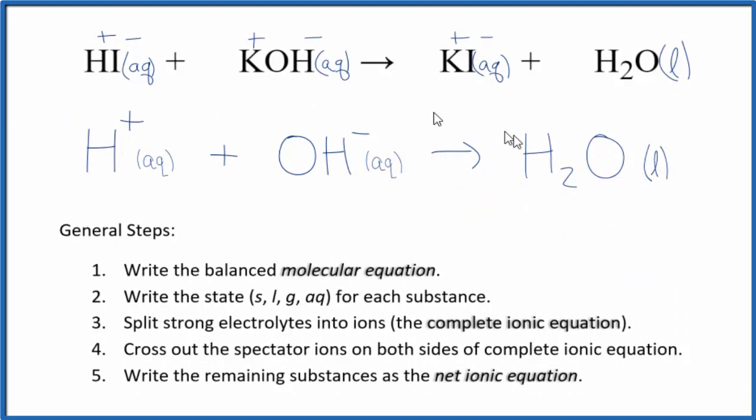And this is the net ionic equation for hydroiodic acid plus potassium hydroxide. You can see the charges, we have a plus and a minus, they balance out to give us a neutral compound. You can also see mass is conserved. We have two hydrogen atoms here, two over here, one oxygen, one oxygen. So mass is conserved as well.